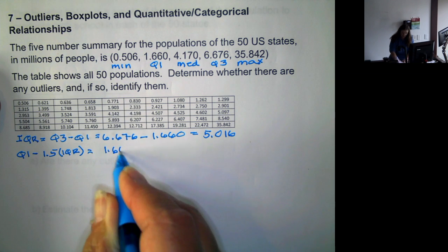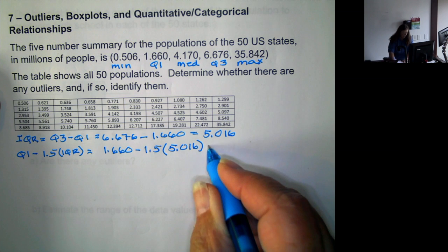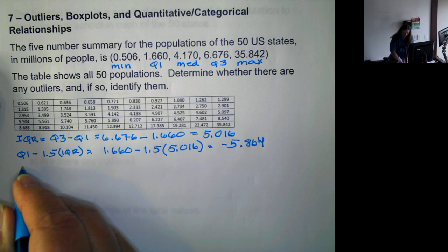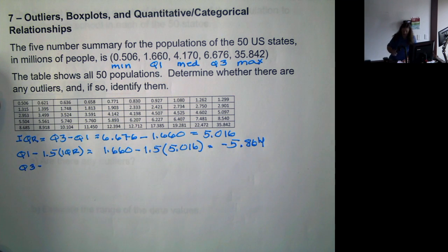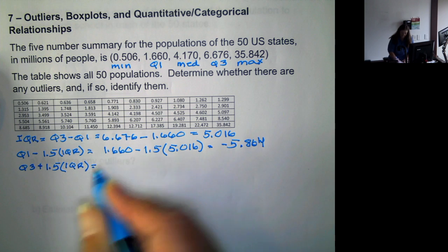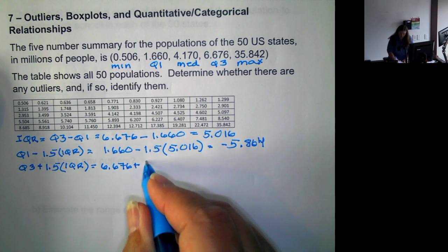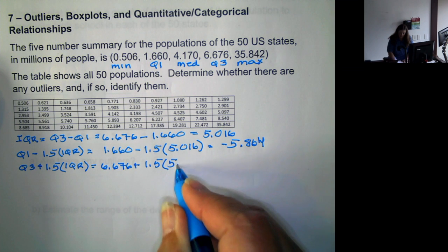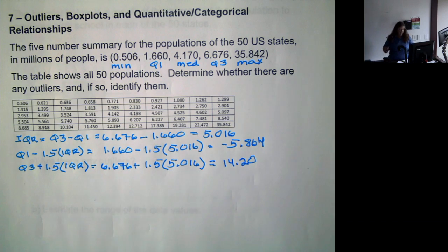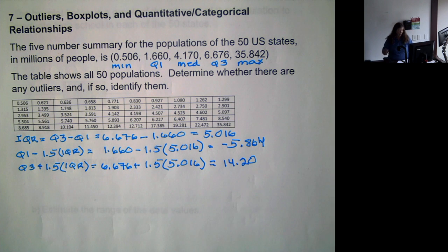So that would be 1.660 minus 1.5 times 5.016, which gives us a negative 5.864. That would be the lower limit to identify outliers. Then we take Q3 plus 1.5 times the IQR, which is 6.676 plus 1.5 times 5.016, which gives us 14.20. Now, any numbers that are between negative 5.864 and positive 14.20 would be considered outliers.